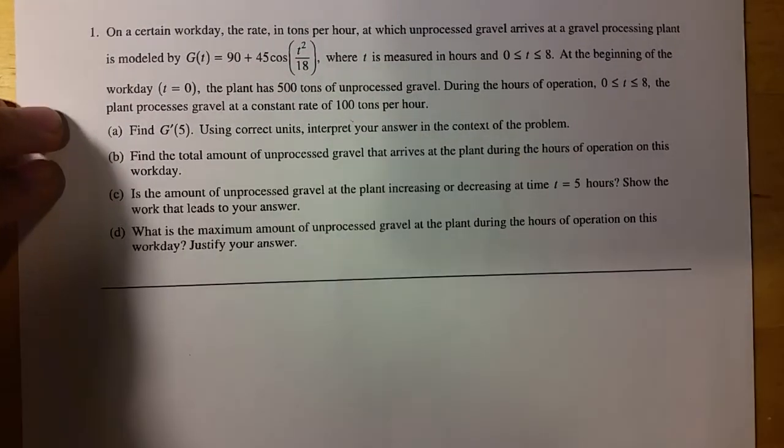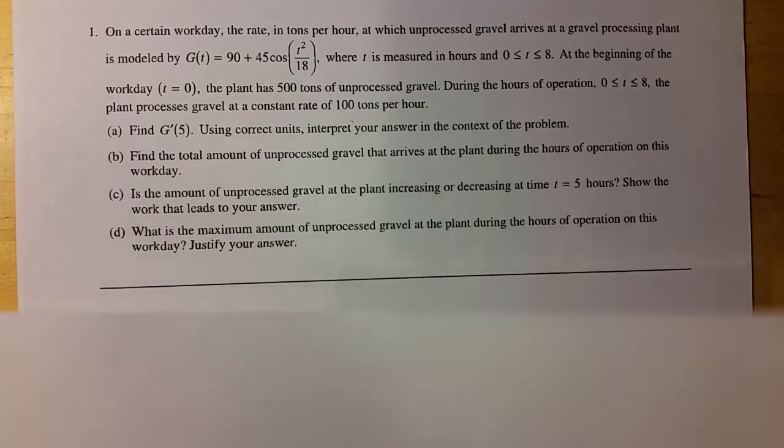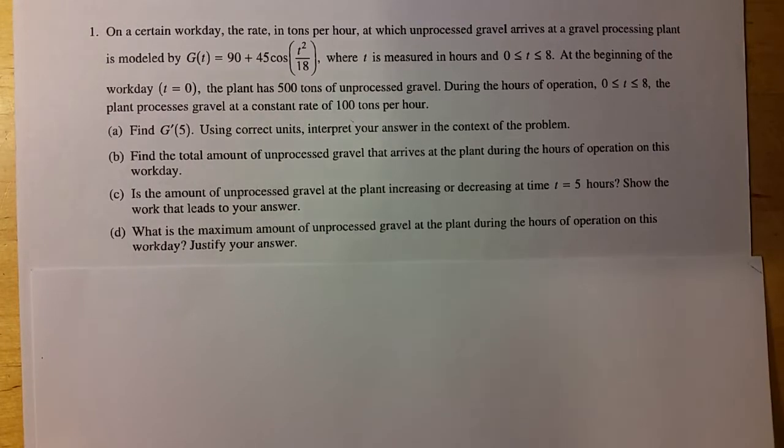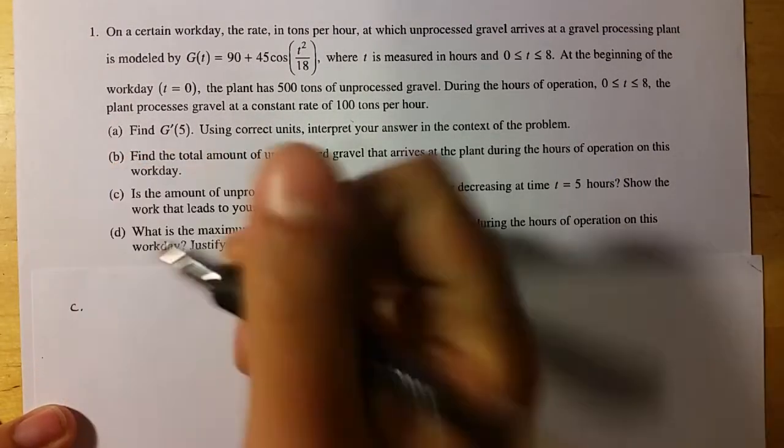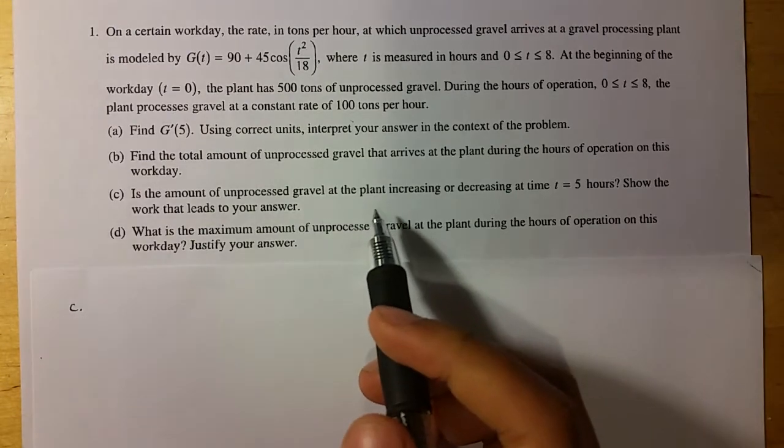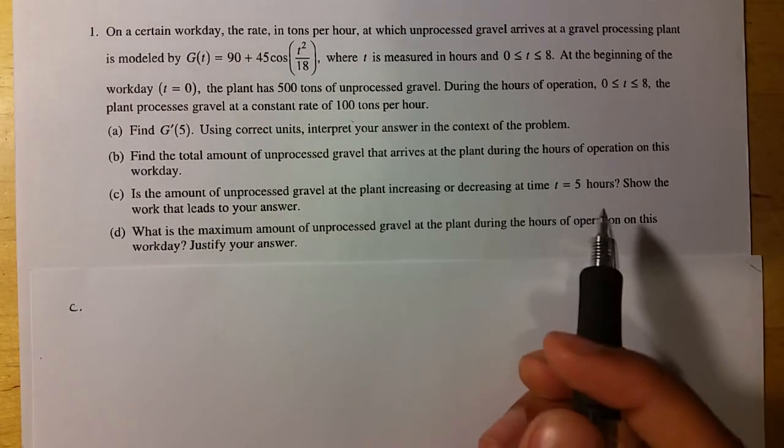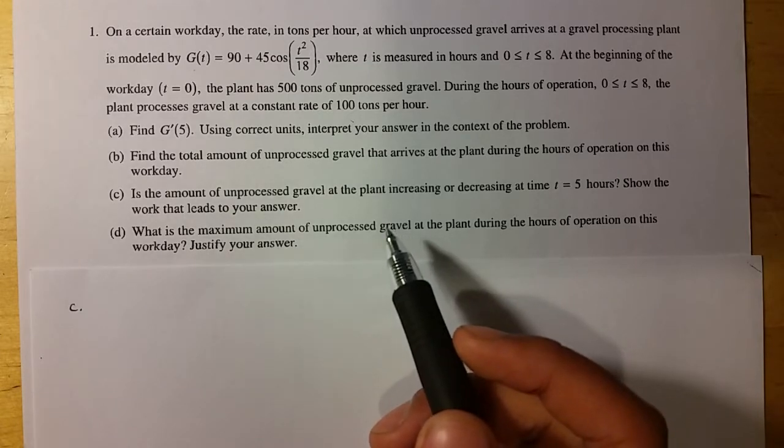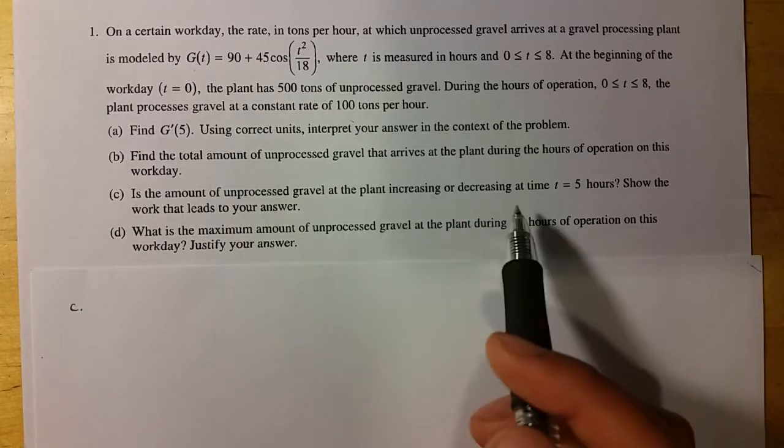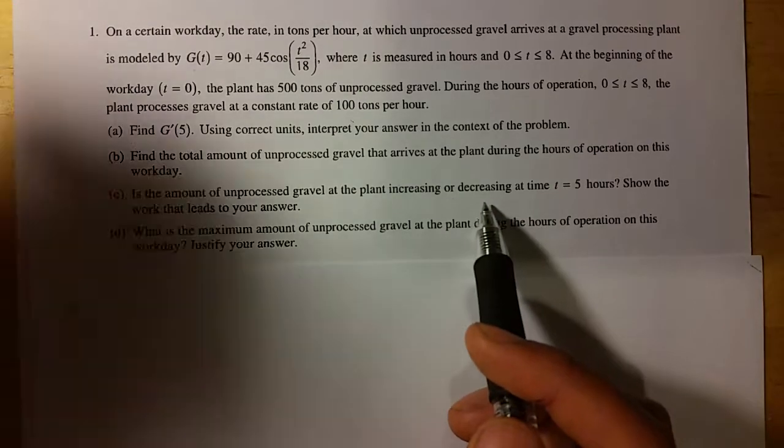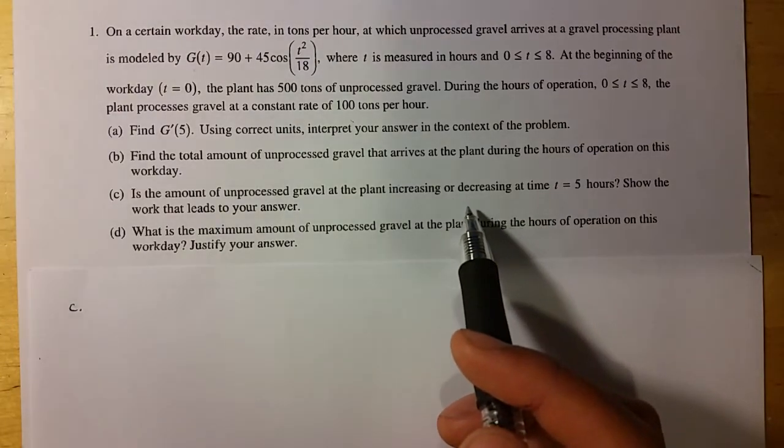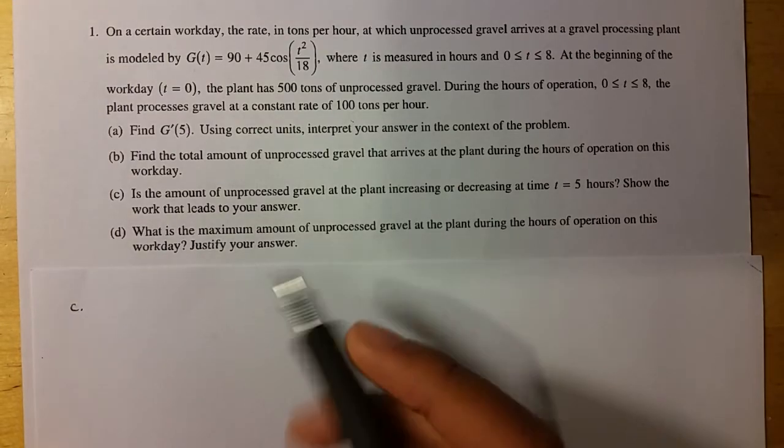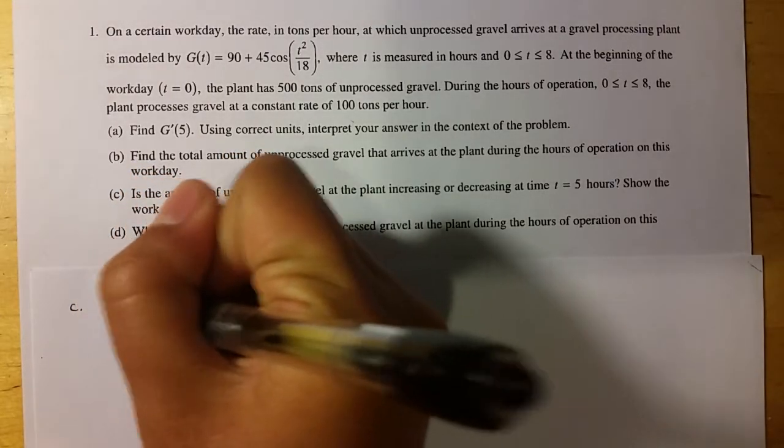Now the next two parts may be a little bit harder. Part C and D. Part C is asking, Is the amount of unprocessed gravel that arrives at the plant increasing or decreasing at t equals 5 hours? And you should show your work. So basically, you want to know if it's increasing or decreasing. So you can just use the first derivative test, basically. Or just by using the first derivative. Because if the derivative is positive, then it's increasing. If it's negative, it's decreasing. So that's not too hard either, actually.